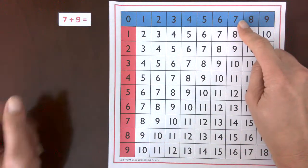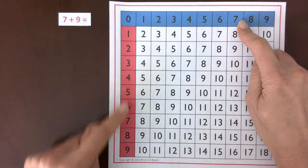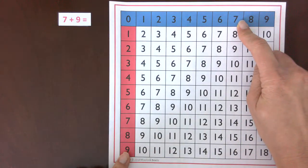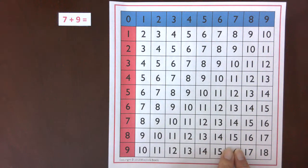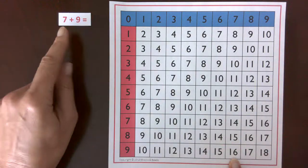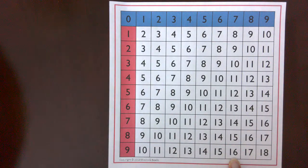The next step we'll find the nine. Slide our finger all the way down, staying in that column, all the way over, and our sum is 16. So 7 plus 9 is 16.